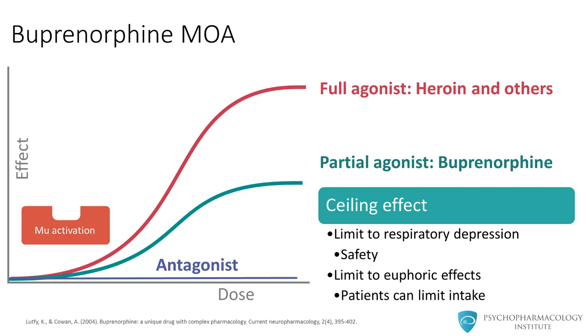This is exactly why patients can be trusted to take one or two tablets a day and refrain from taking additional tablets. For patients who are addicted to opioids, by definition they are unable to control their opioid intake. However, with buprenorphine, because of its partial agonism, they are actually able to limit their intake to what is recommended and prescribed.